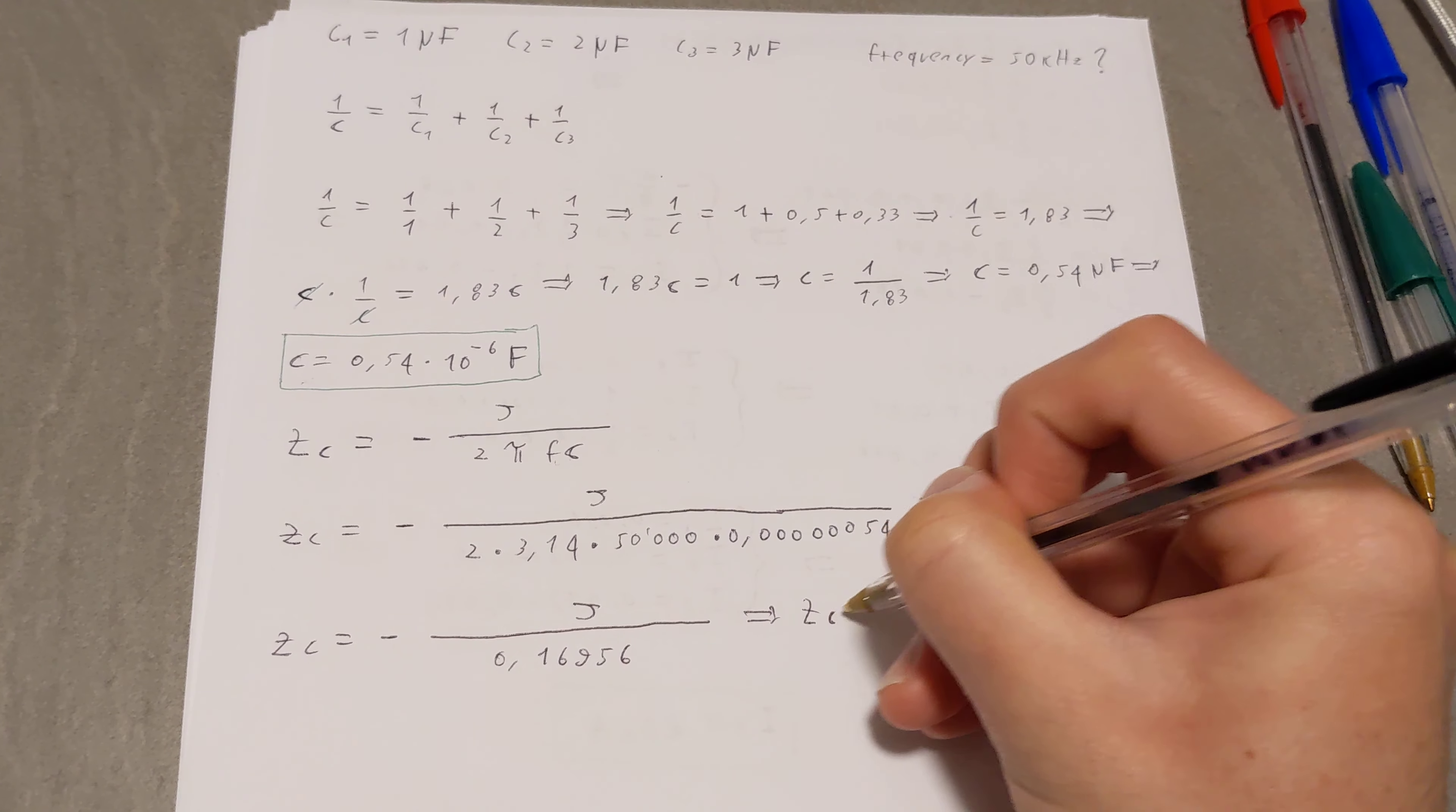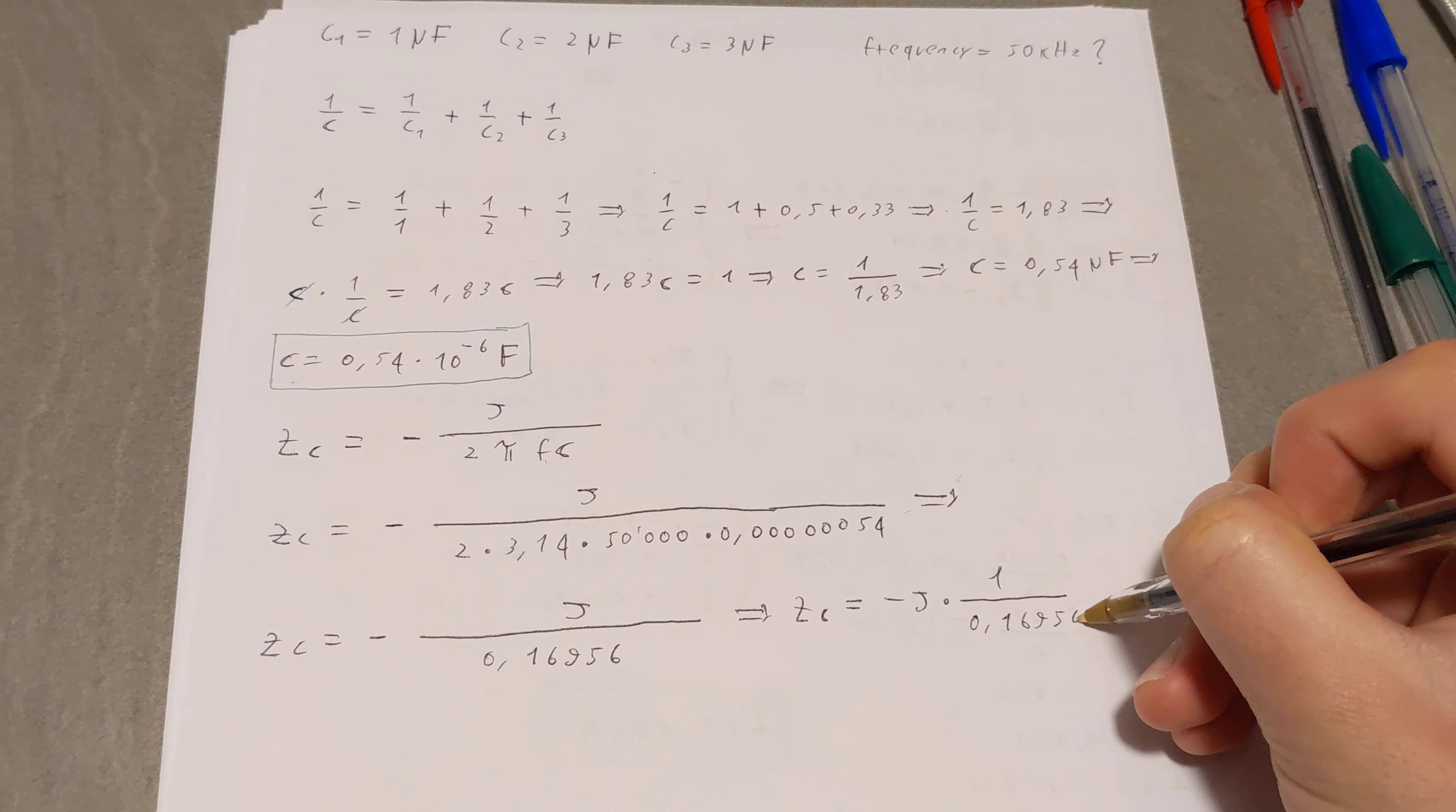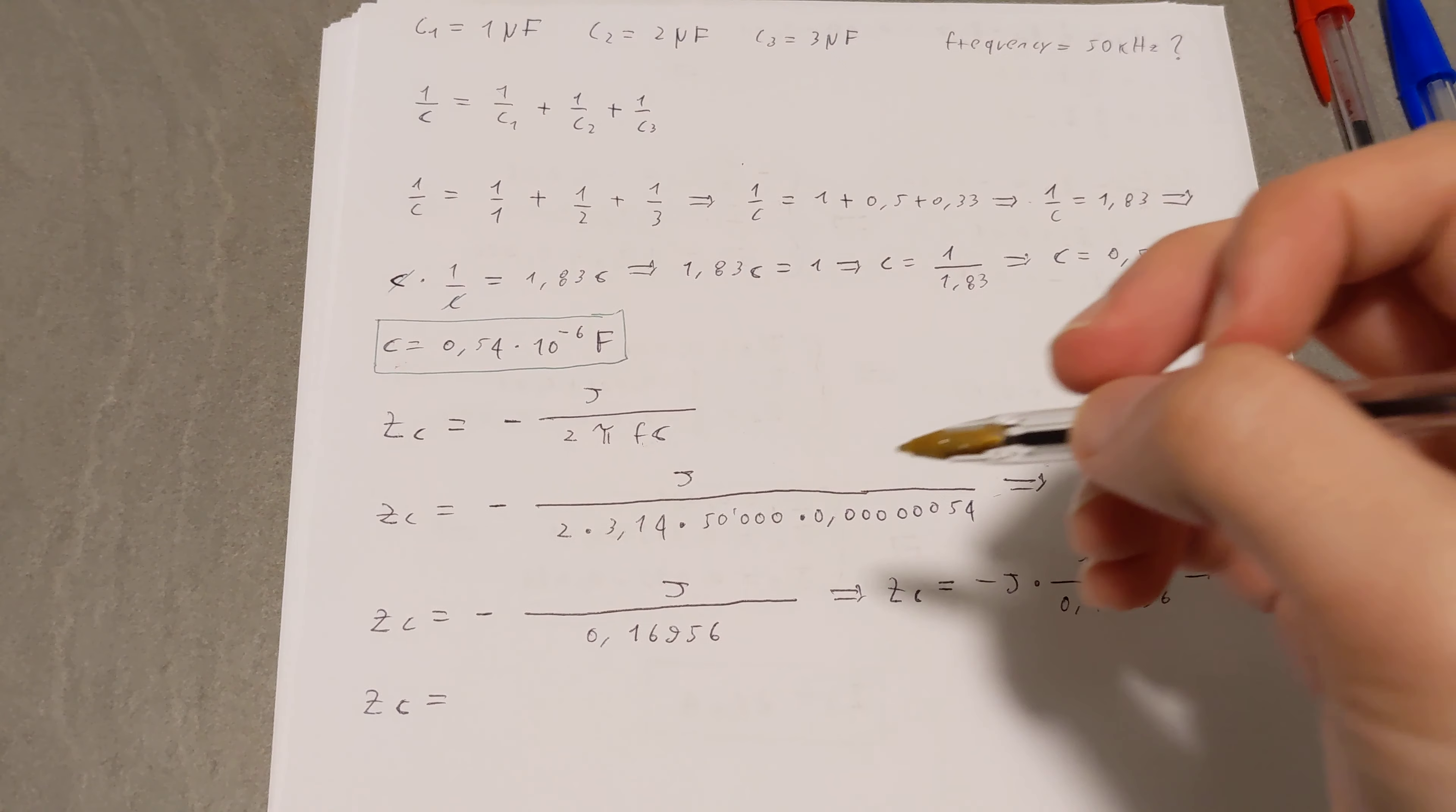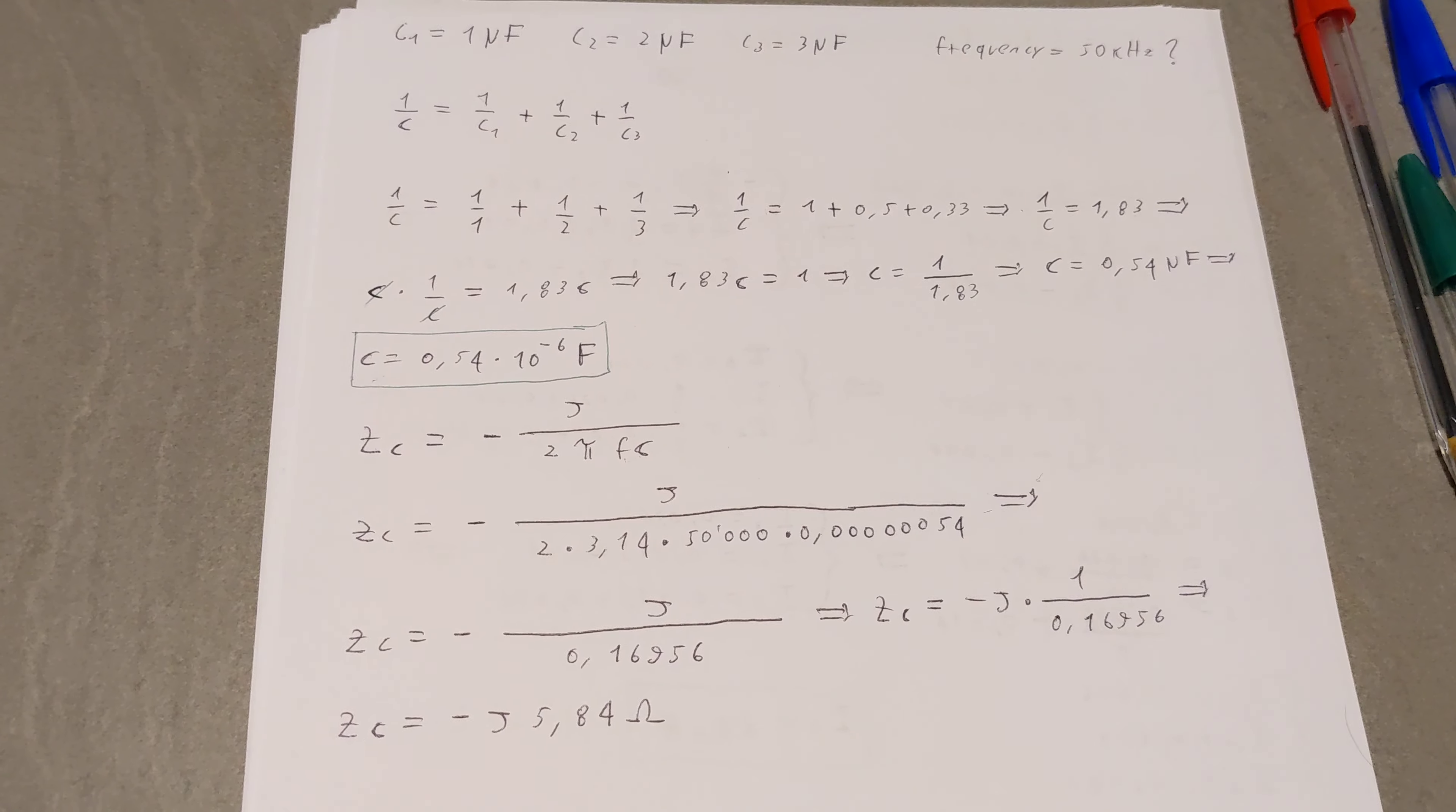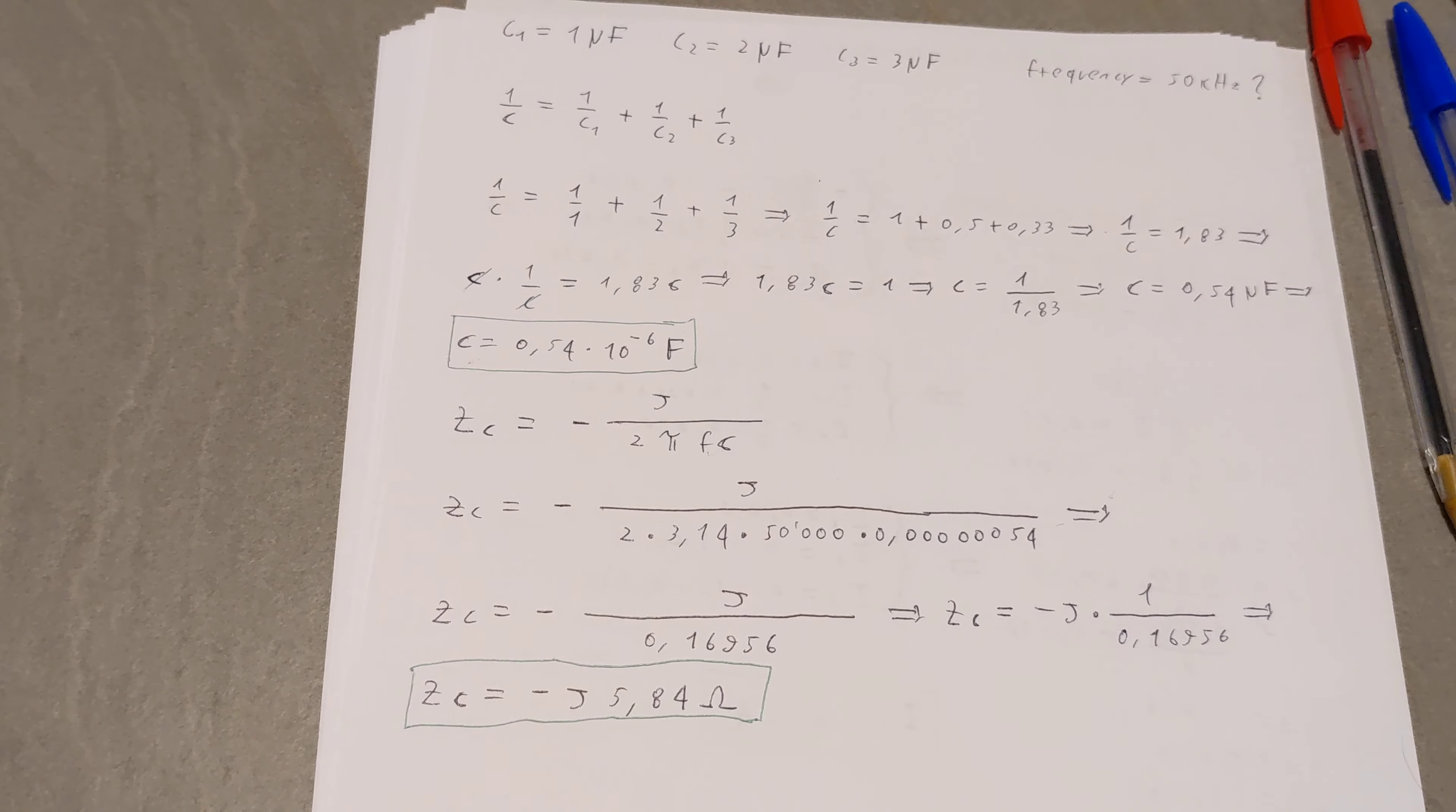So ZC is equal to negative J times 1 over 0.16956. So our final answer, the impedance is negative J 5.84 ohms. And this is our final answer.